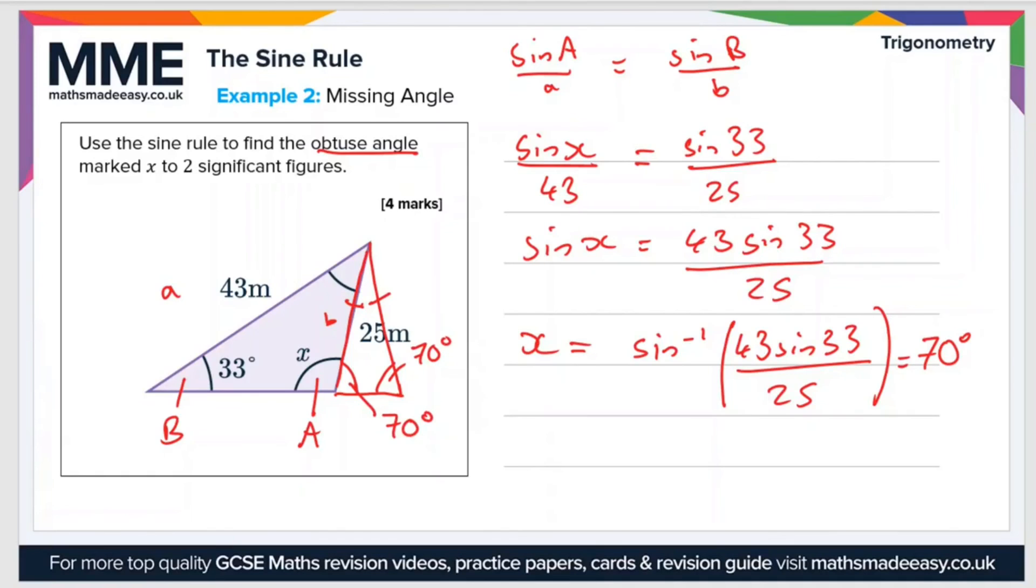So, in order to find the obtuse angle, which is X, all we have to do is minus 70 degrees from 180 degrees, because the two angles are on a straight line along the bottom. Therefore, X is 110 degrees to two significant figures.